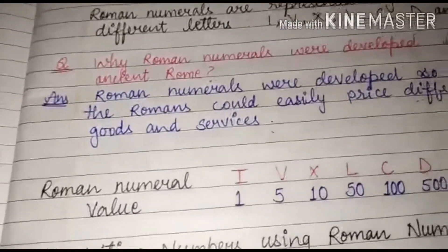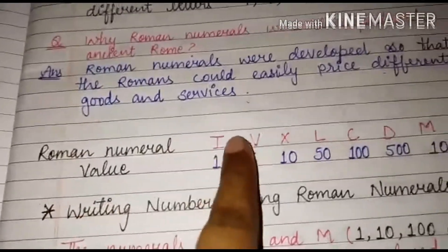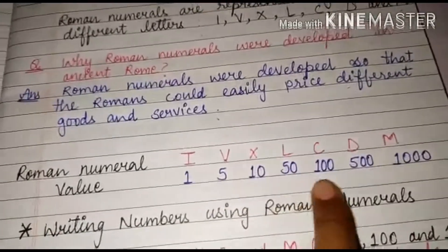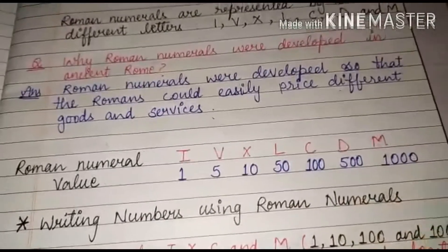Now what are Roman numerals and what are their values? So I stands for 1, V indicates 5, X indicates 10, L indicates 50, C indicates 100, D indicates 500, M indicates 1000.